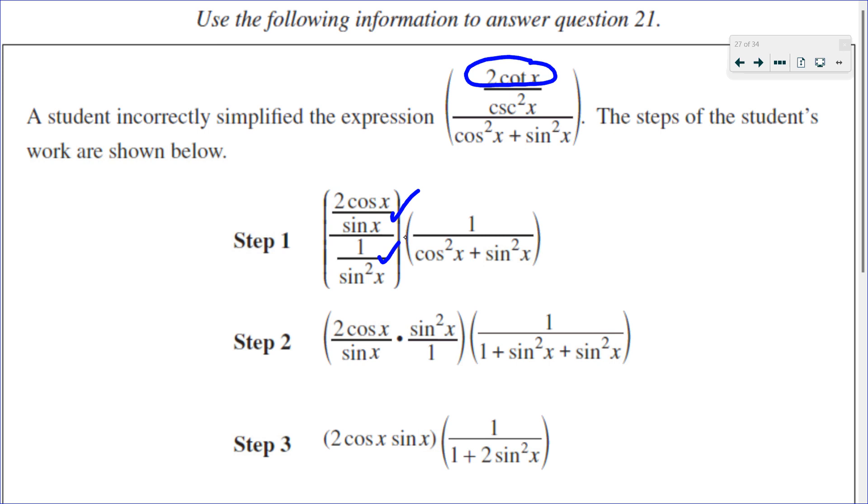That's also correct. And then since we're dividing by cos squared plus sine squared, that's the same as multiplying by 1 over cos squared plus sine squared. So I'd say step 1 is correct.